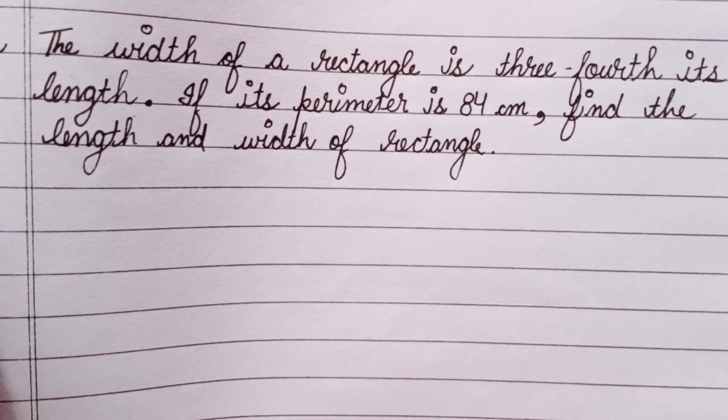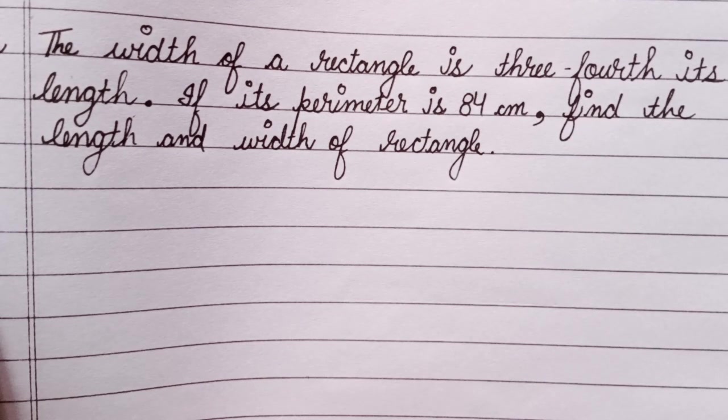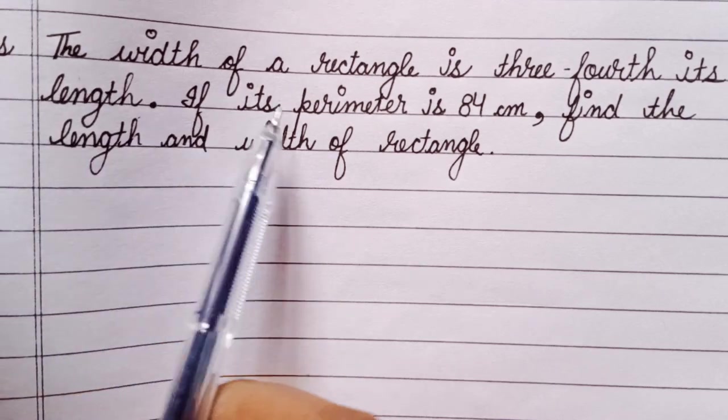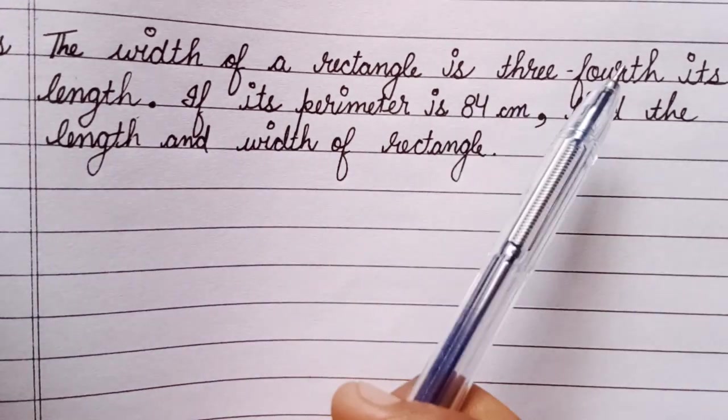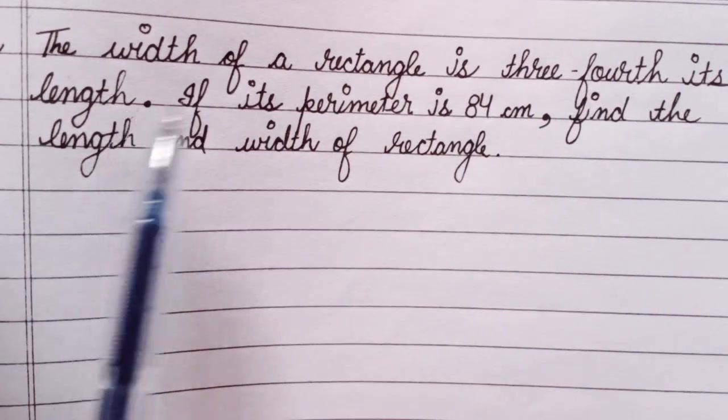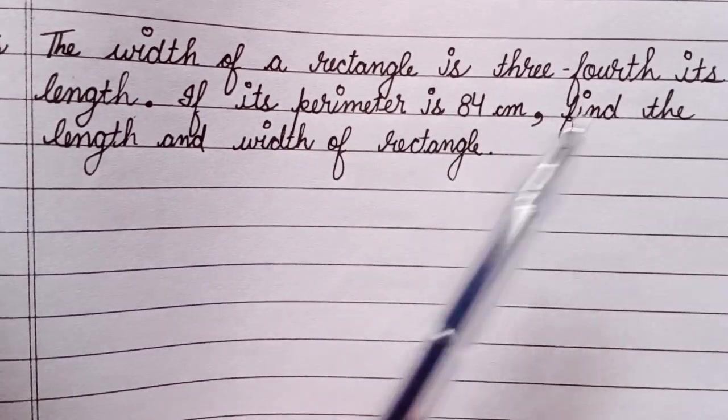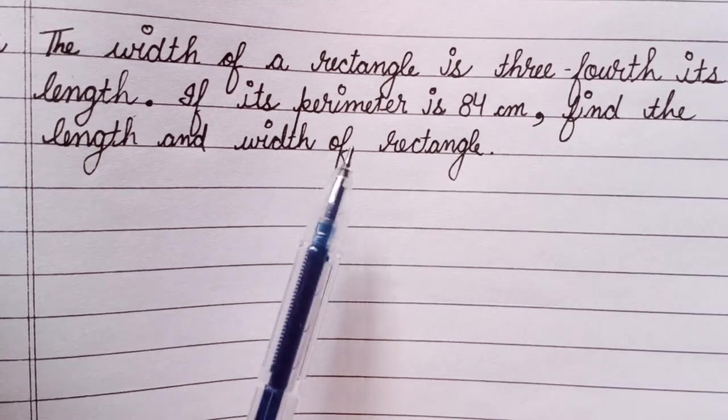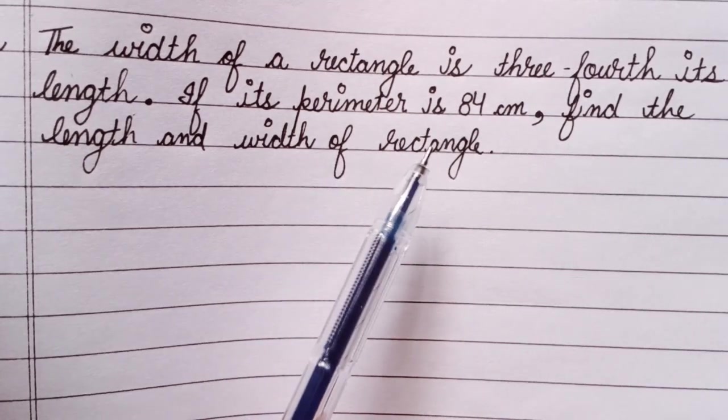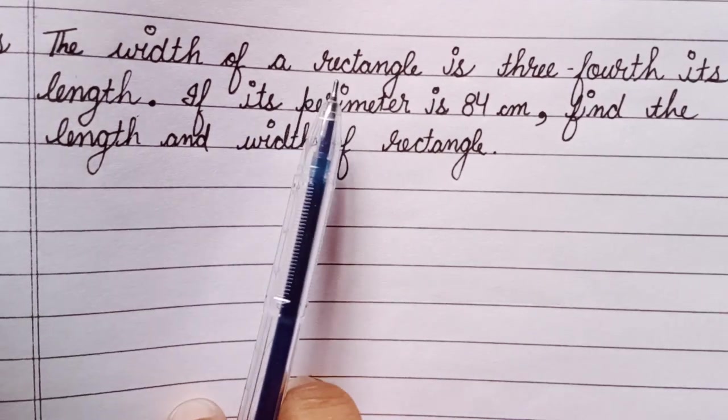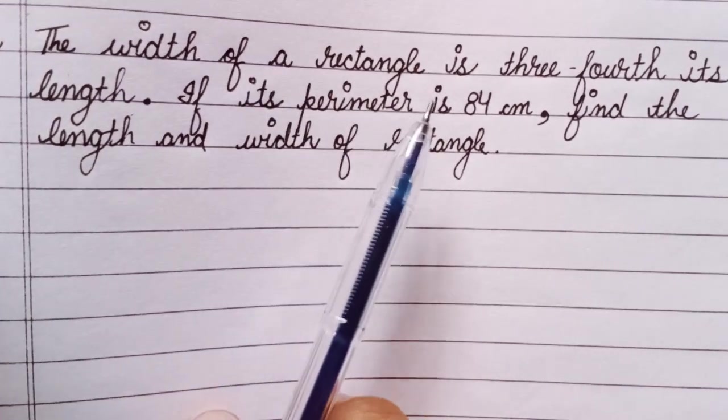Hi friends, welcome back to my channel. Today we are going to find the solution of this question. The question is: the width of a rectangle is three-fourths its length. If its perimeter is 84 cm, then find the length and width of rectangle. In the question, the relation is given between the width and the length of rectangle.